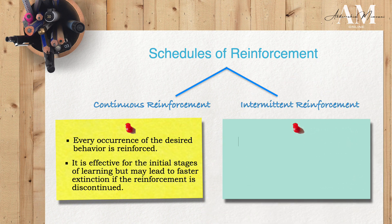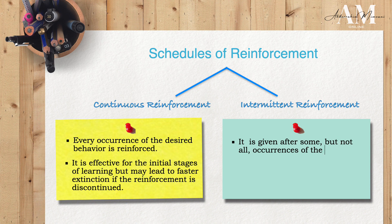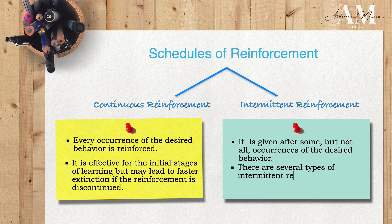Intermittent reinforcement, on the other hand, can metaphorically represent a sporadic rain shower in a desert — unpredictable yet impactful. In this approach, reinforcement is delivered after some, but not all, occurrences of the desired behavior. Intermittent reinforcement can be further divided into several types. Let's take a closer look at each type.